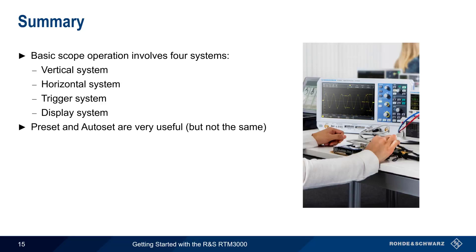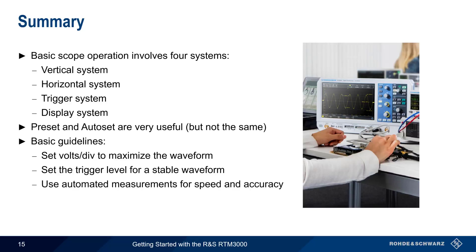Making good voltage versus time measurements is easier if you follow a few simple guidelines, such as setting volts per division to maximize the waveform on the screen, setting an appropriate trigger level to get a stable waveform, and using automated measurements whenever possible for both speed and accuracy.